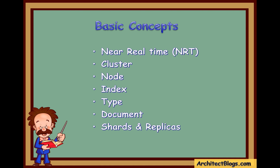The next concept is node. A node is nothing but a single server that is a part of our cluster. This node stores our data and participates in the cluster's indexing and search capabilities. Just as a cluster has a unique name, a node is also identified by its name, and a node can be configured to join a specific cluster by using the cluster name.